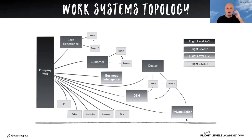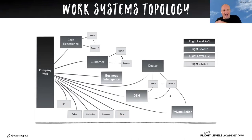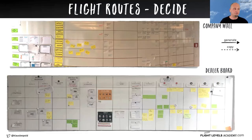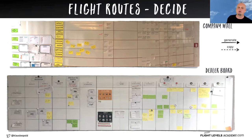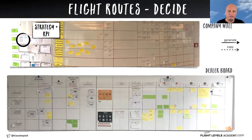We need to connect the work systems. When we say connect them, we need to understand what are the different work items we are managing on each level and how is the work flowing through these systems. What you see here is the company wall — the flight level two and flight level three combination. The company wall comes up with the company strategy and KPIs they want to achieve. The dealers take this information, put it on their dealer board, and refine it: what does this mean for our product?